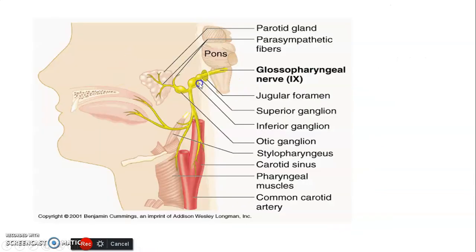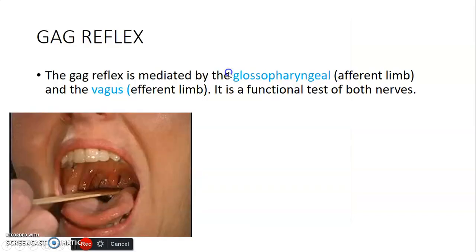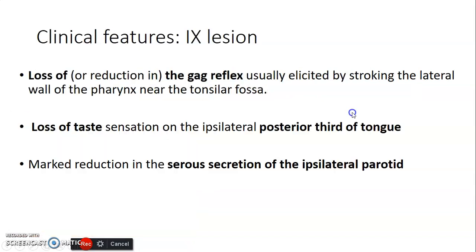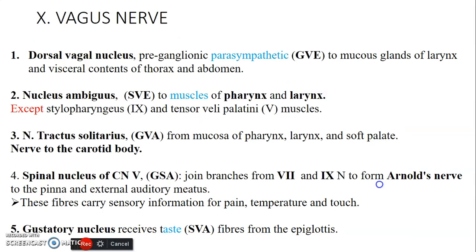Reviewing the diagram: the superior and inferior ganglia are at the jugular foramen, the lesser petrosal goes to the otic ganglion, and post-ganglionic fibers go to the parotid gland. Branches also go to the stylopharyngeus, carotid body, carotid sinus, pharyngeal muscles, and posterior third of the tongue for taste. The gag reflex uses glossopharyngeal as the afferent and vagus as the efferent, testing both cranial nerves IX and X. Lesions cause loss of gag reflex, loss of taste in the posterior third of the tongue, and reduced secretion from the ipsilateral parotid gland.